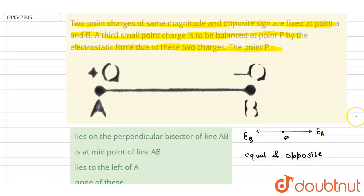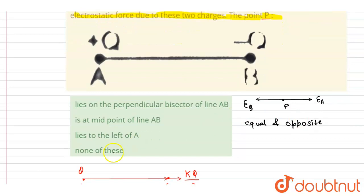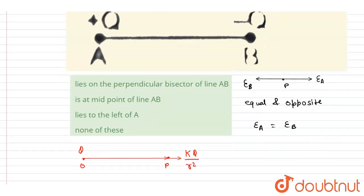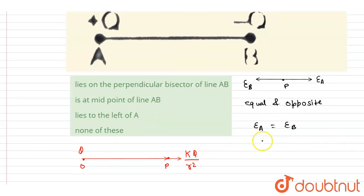So how can the electric fields be equal and opposite? If we call them EA and EB, they should both have equal magnitude. For equal magnitude, we need kq/rA² = kq/rB², which means the distance from charge A and the distance from charge B should be equal.